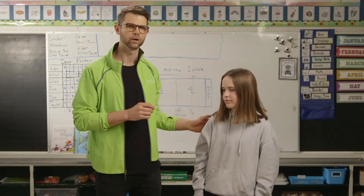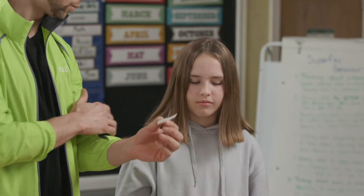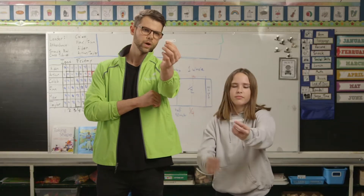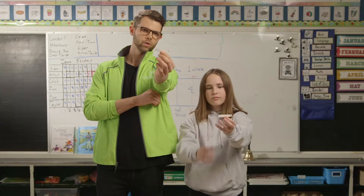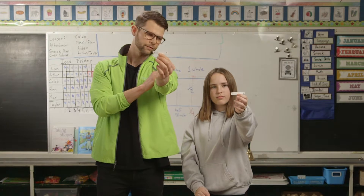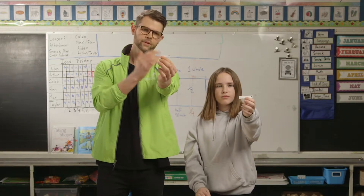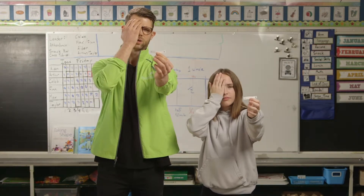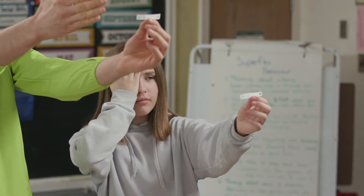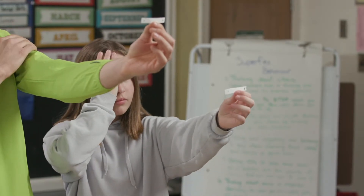My helper Haley will show you how to hold this piece of paper. I'm going to demonstrate it first, and Haley will do it at the same time. You want to hold the paper at arm's length in your left hand, cover your right eye with your right hand, and look at the X on this side with your left eye.